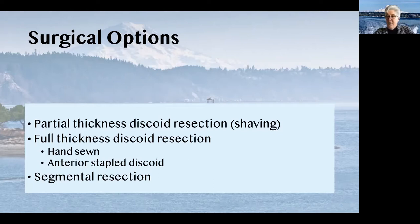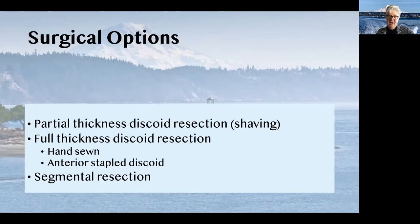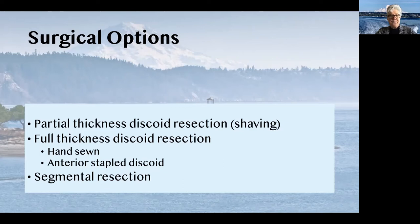How do you decide which way to go? Mostly it's based on the size and location of the lesion as well as how it lies on the bowel wall — is it more longitudinal or more width-wise? A few years ago there was quite a vigorous discussion at AAGL about the potential complications of segmental resections and how we should be doing more shaving and more discoid resections and less segmental resections. So I thought I would do a very brief literature review before we get into the surgical videos.